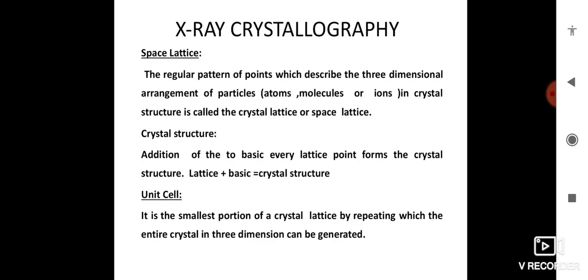Next one is unit cell. It is the smallest portion of a crystal lattice by repeating which the entire crystal in three dimensions can be generated. Any unit cell of a crystal is defined by the length of its edges and angles between them.